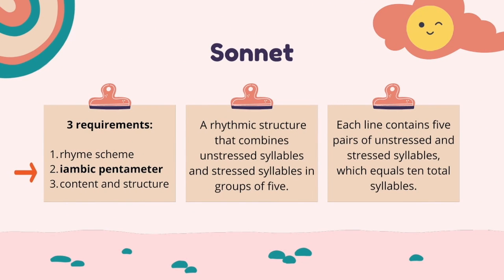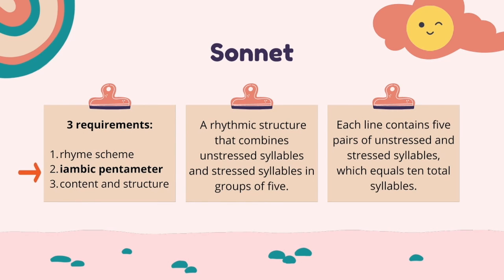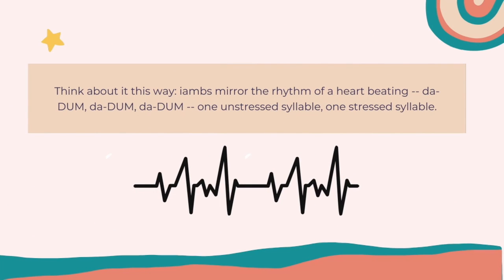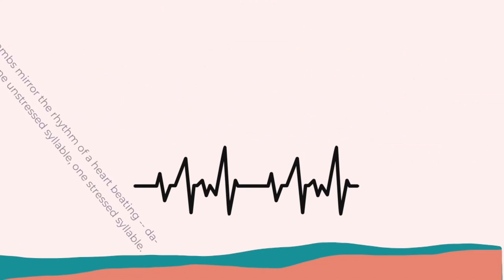The second requirement of a sonnet is the iambic pentameter, which is a rhythmic structure that combines unstressed syllables and stressed syllables in groups of five. Each line contains five pairs of unstressed and stressed syllables, which equals 10 total syllables. Think about it this way: iambic pentameter mirrors the rhythm of a heart beating — da-dum, da-dum, da-dum — one unstressed syllable with one stressed syllable.